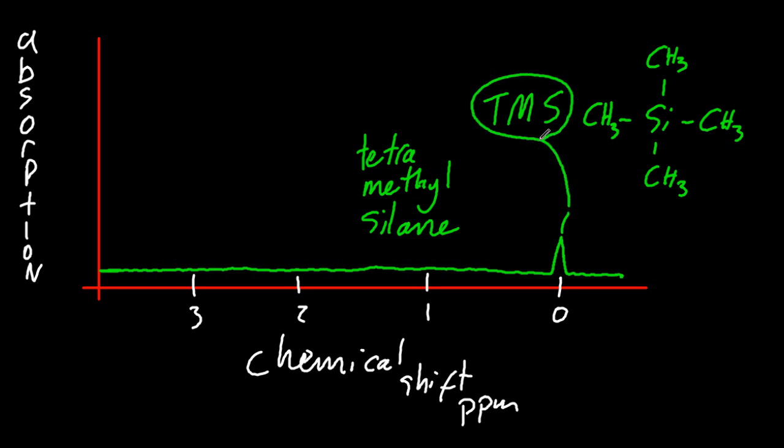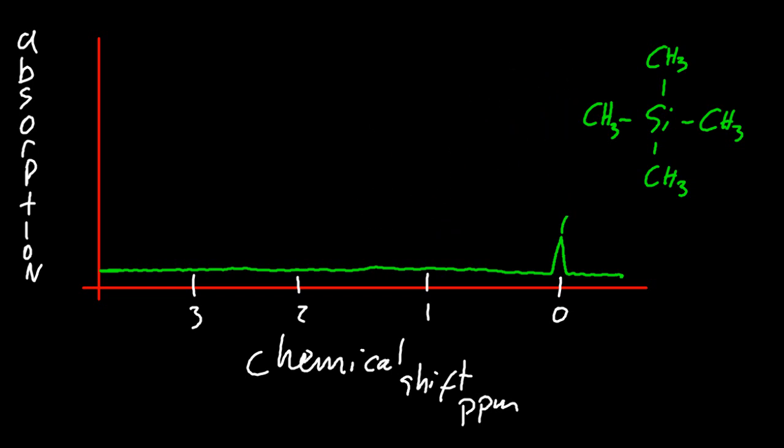There are five reasons TMS is used. Reason number one is that the silicon is unlikely to be in your sample, and so the TMS, the silicon in the TMS, is going to put a peak far away from the other peaks in your sample. Your sample is probably going to have carbon and nitrogen, oxygen, attached to the hydrogen.